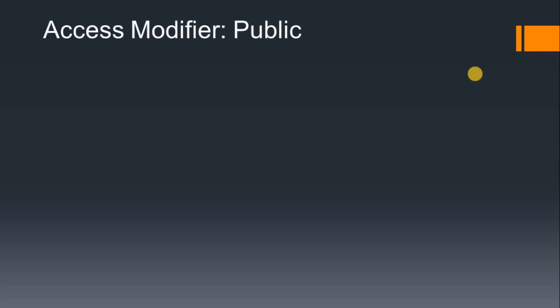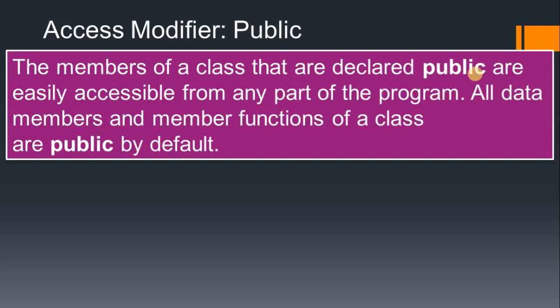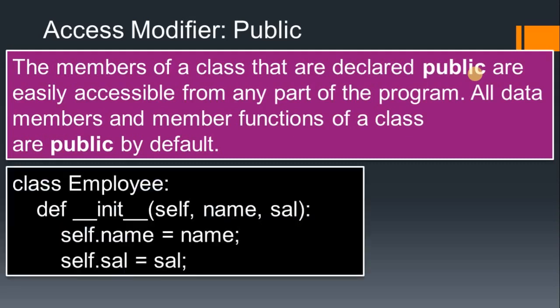There are three types of modifiers: public, private, and protected. We will see all these modifiers. Starting with public — the members of the class that are declared public are easily accessible from any part of the program. Inside the constructor we use self to access values, like self.name = name. By default, these variables are public.